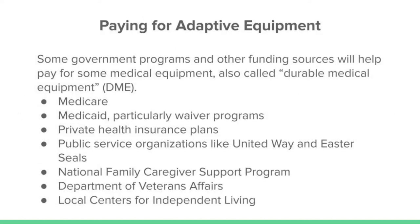Adaptive equipment is also called durable medical equipment. Some government programs and funding sources will help pay for it. Medicare, Medicaid, and waiver programs will pay for a lot. Also private health insurance, public service organizations like United Way and Easterseals, national family caregiver support programs, the Department of Veterans Affairs, and local centers for independent living.